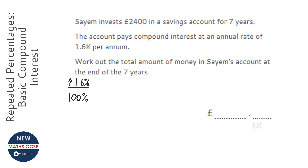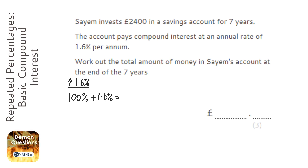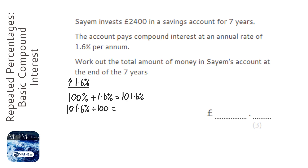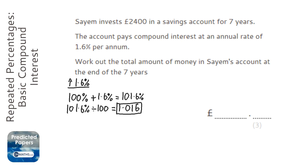To use the multiplier method, you start off with 100 and add or take away the percentage depending on the question. Here we're adding because it's going up by 1.6 percent, so we end up with 101.6 percent. Then you work that out as a multiplier by dividing by 100 — a multiplier is just a posh way of saying decimal. So 1.016 is now our multiplier.